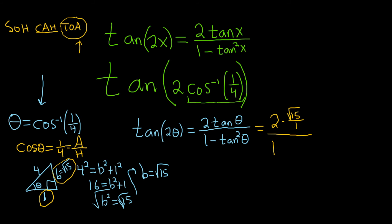Divided by 1 minus, and then here it's the same thing, except it's tangent squared. So it's opposite over adjacent. So it'll be the square root of 15 over 1, and the whole thing is squared.